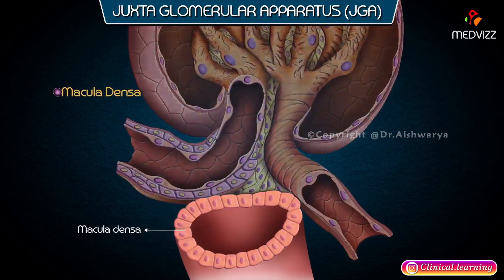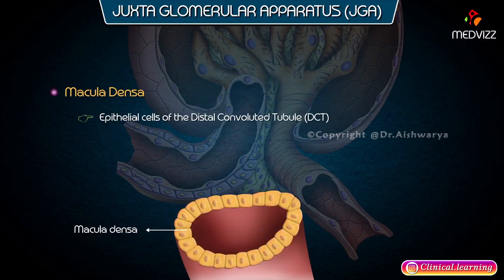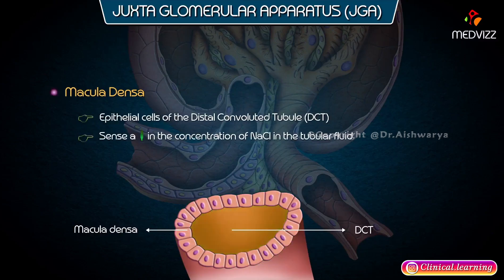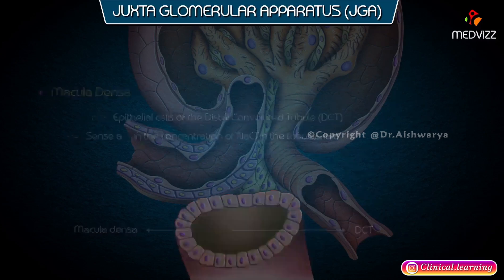The macula densa consists of epithelial cells of the distal convoluted tubule, which sense a decrease in the concentration of sodium chloride in the tubular fluid.